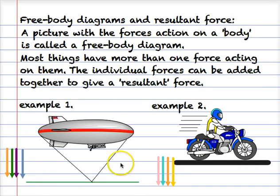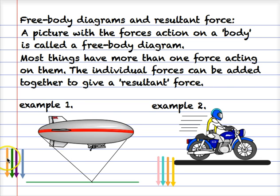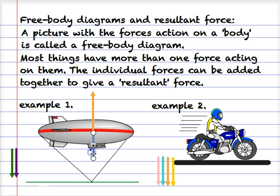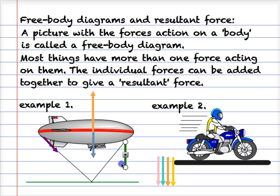These pictures — one of a blimp or airship and one of the motorbike again with force arrows drawn on them — are free body diagrams. Looking at the forces acting on the blimp: it's floating in the air so we have a buoyancy force pushing it upwards. It's an object in a gravitational field so it has weight, which must be less than the buoyancy. In this case it's tethered to the ground, so there must be two other forces, one in each rope, holding it to the ground.